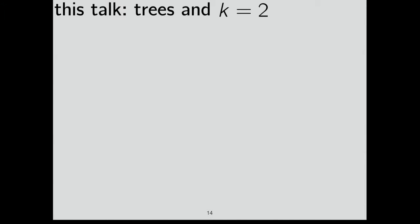In this talk, we'll focus on really small sets — specifically pairs (K=2), meaning you observe one thing and predict one other. We'll also restrict to trees — not just locally tree-like, but outright trees — to probe this question further. It turns out these answers are not known even in this simple situation.